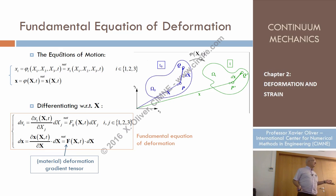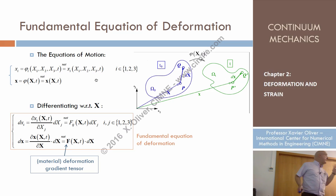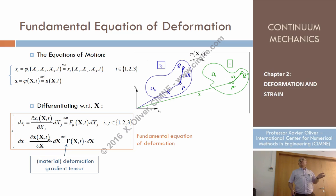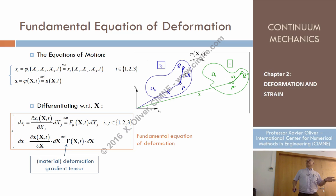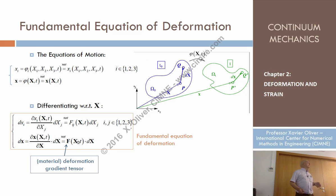So this answers our question. What information do I need in order to describe the current relative position of two particles in terms of their initial relative position around a particle P? That information is this tensor — the deformation gradient tensor.